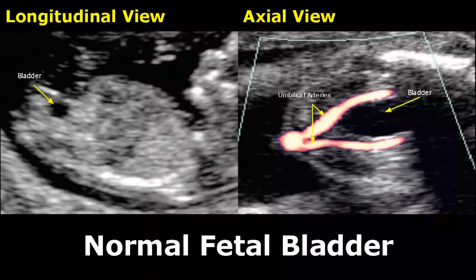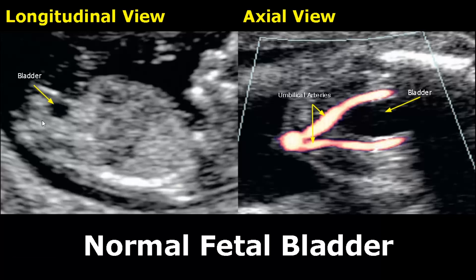Hello everyone, this is Dr. Sam, and today we will study fetal bladder ultrasound. Here we have the longitudinal and axial views of the fetal bladder — it is a fluid-filled, anechoic structure in the pelvis. This image is with Doppler; we can see the umbilical arteries surrounding the bladder, which can be useful in locating it.